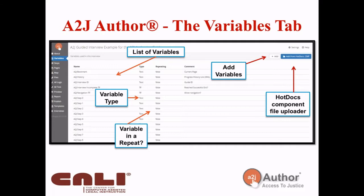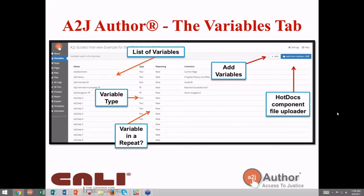Note the difference from A to J 4: you could create variables on the fly within a question. In A to J 6, you need to create all your variables in the Variables tab so that the proper type can be set and repeat options are correctly checked. Creating variables wherever you needed them was convenient, but it caused the most problems in testing. With the new strictness of Hot Docs, you absolutely must get the variable type — text, true-false, or number — correct, otherwise the document doesn't assemble at the other end.